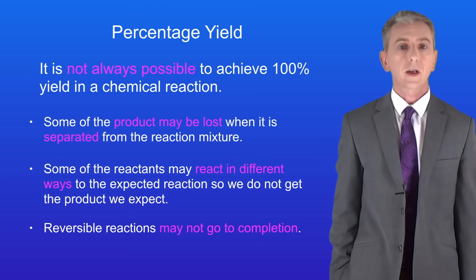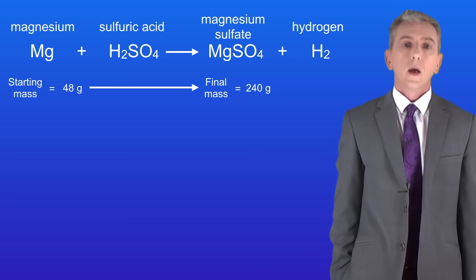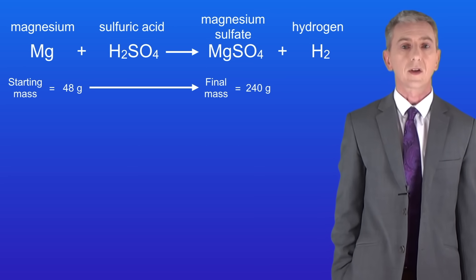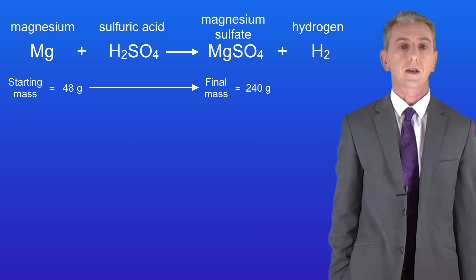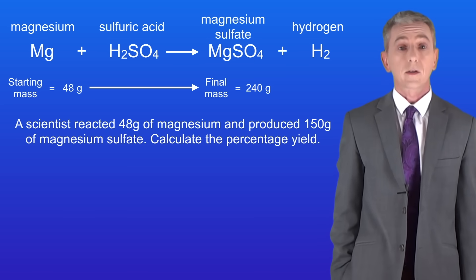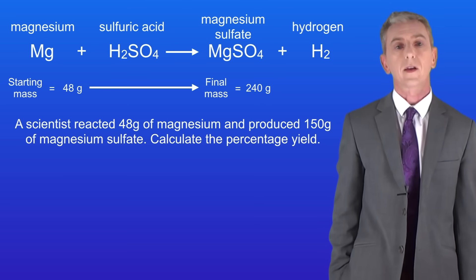So in this video we're looking at how to calculate the percentage yield for a reaction. Let's go back to our previous reaction. We know that 48 grams of magnesium can produce 240 grams of magnesium sulfate if we achieve 100% yield. Here's a typical question. A scientist reacted 48 grams of magnesium and produced 150 grams of magnesium sulfate. Calculate the percentage yield.